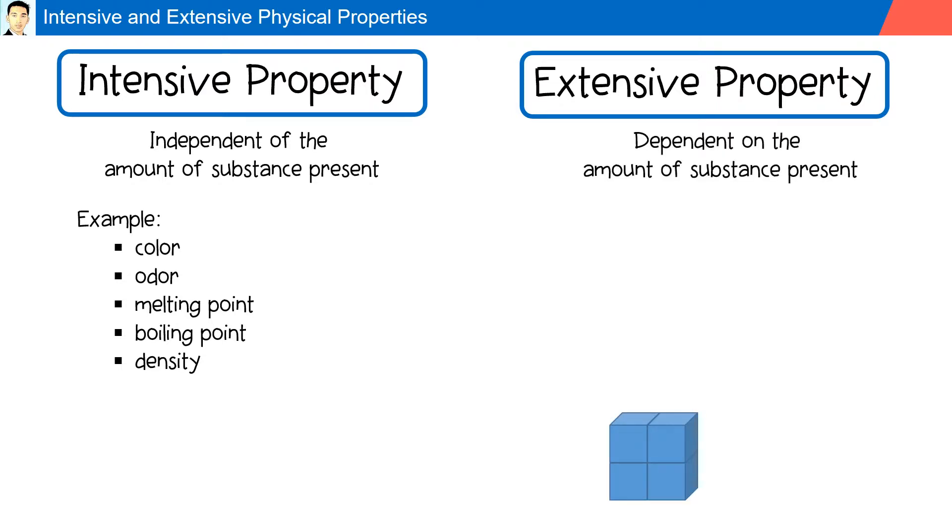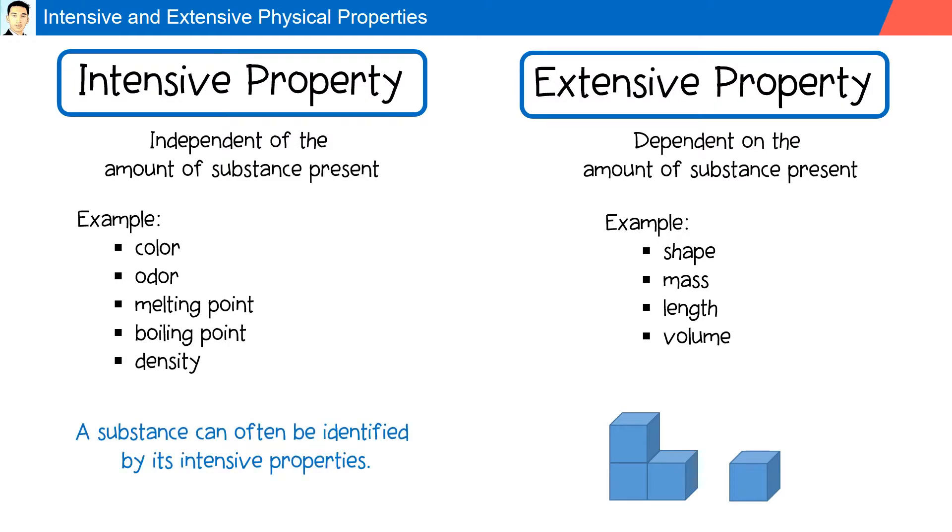Extensive property does not depend on the amount of substance present. Example: shape, mass, length, and volume. A substance can be identified by its intensive properties.